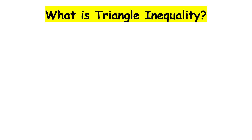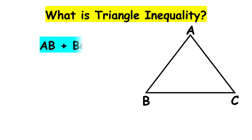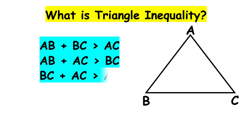In triangle ABC, AB plus BC must be greater than AC. AB plus AC must be greater than BC. And BC plus AC must be greater than AB.